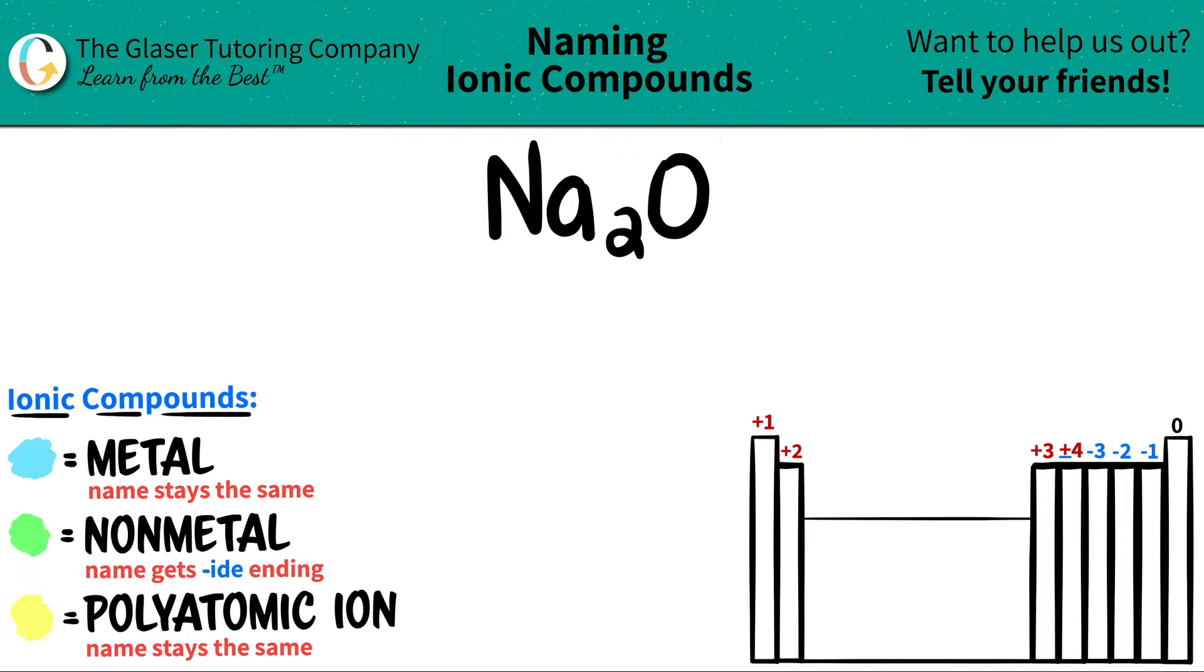Ionic compounds, generally, if you have only two elements, in this case we only have two elements, one has to be the metal and one has to be the nonmetal.